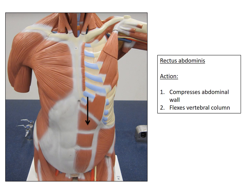Our next muscle is the rectus abdominis, indicated by the black arrow. The action of this muscle is to compress the abdominal wall and to flex the vertebral column. The rectus abdominis is commonly known as your six-pack abs — these are the muscles that, if very developed, appear to give you six-pack abs.